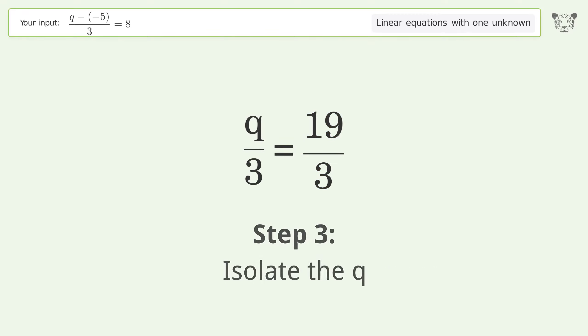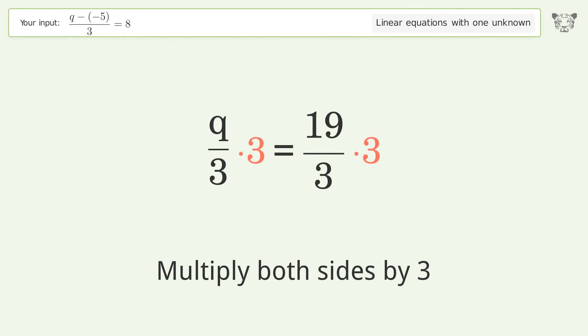Isolate the q. Multiply both sides by 3. Group like terms.